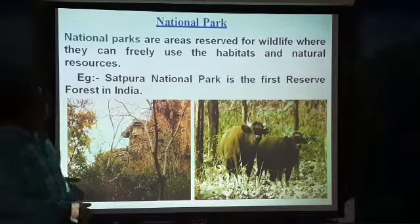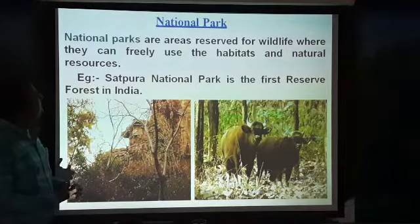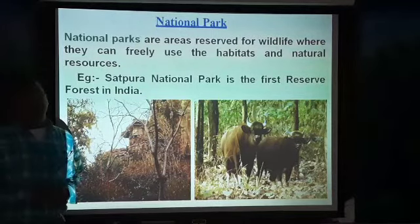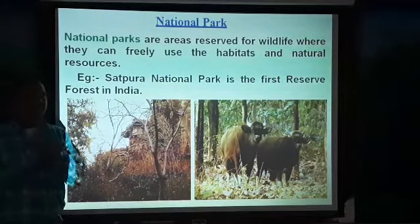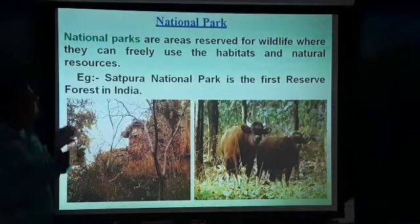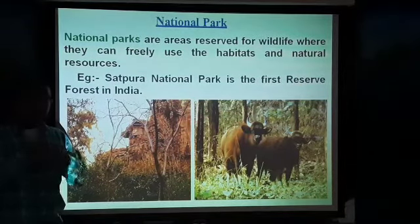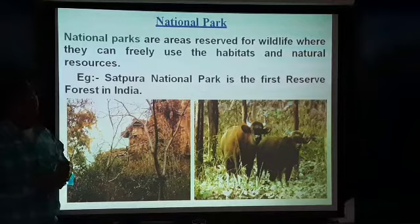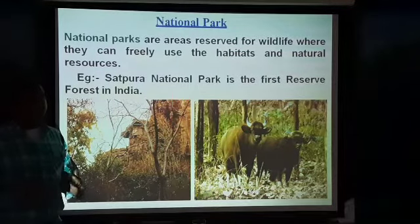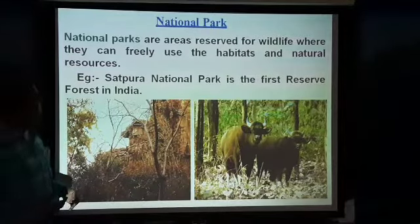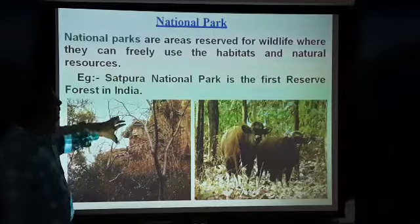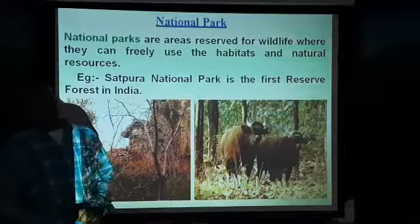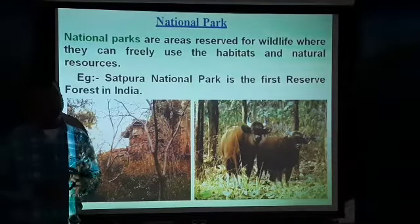The next topic is national parks. National parks are areas reserved for wildlife where they can freely use their habitats and natural resources. It is one more way of protecting and conserving wildlife — both plants and animals. They can utilize their habitats and natural resources available around the national park without any disturbance. For example, Satpura National Park is one example — it is the first reserved forest in India. In the next class, we will discuss this topic in more detail.